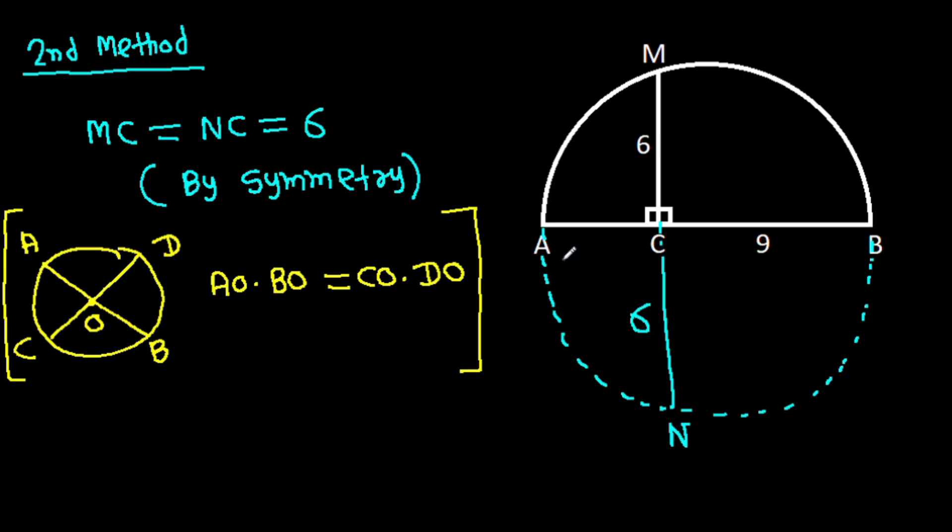And here AB and MN are intersecting at C. So AC times BC, so AC will be MC times NC. And AC times BC is 9, and MC is 6, NC is 6.